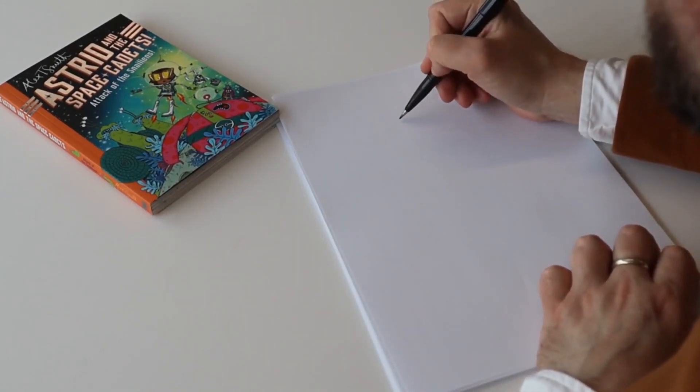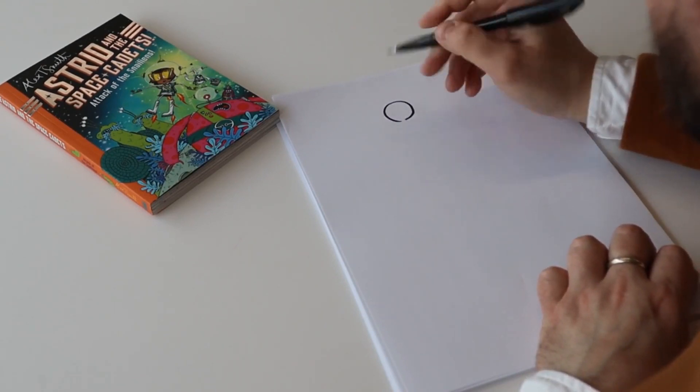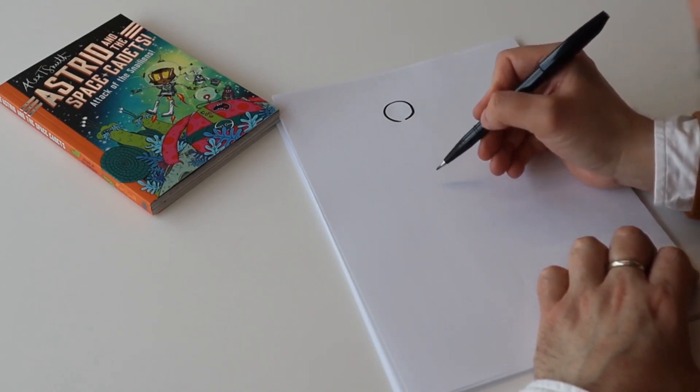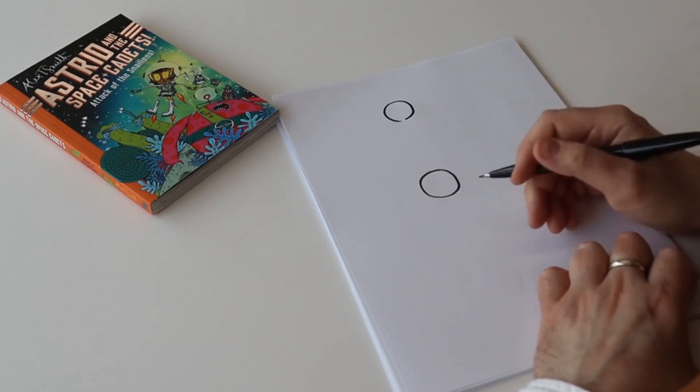Near the top of the page, I want you to draw almost a whole circle but not quite. We're going to leave a little gap there just in the middle, and then we're going to leave a bit of a gap and then underneath we're going to draw another circle.